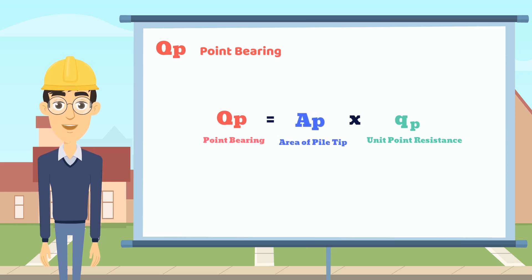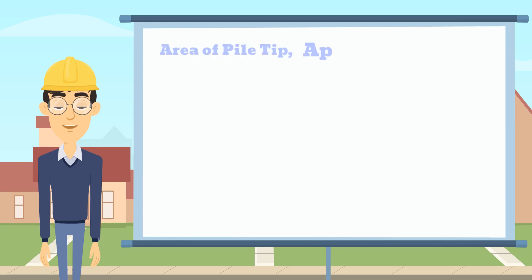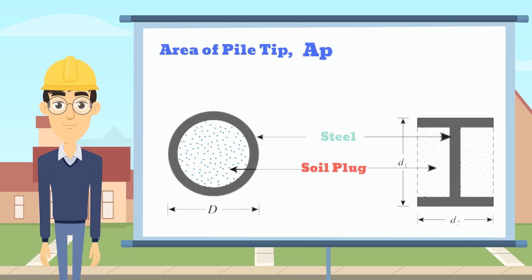First, for the area of the pile tip, be careful that the area of the pile tip includes the part of the soil plug. This is because when we construct open-ended piles, the internal soil may mobilize enough internal shaft resistance to prevent new soil from entering the pile. Therefore, we need to add the area of the soil plug when designing the point bearing capacity for the open-ended pile and steel H pile.